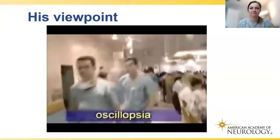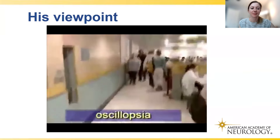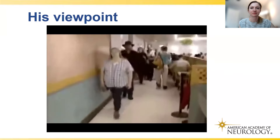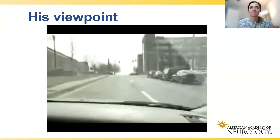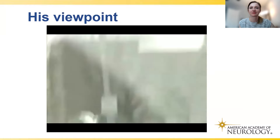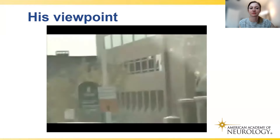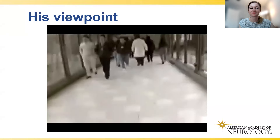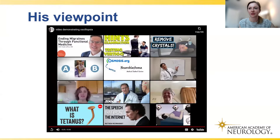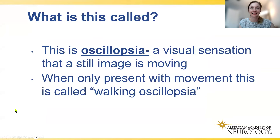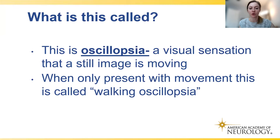Our first case is a 55-year-old man with five years of imbalance and head movement-induced bouncing vision. Walking oscillopsia — the illusion that the environment is moving when we move our heads — is the characteristic visual symptom when vestibular function is lost. It often occurs when riding in a car, especially on bumpy roads, making reading street signs difficult unless the car slows or stops, and also occurs when running or walking.